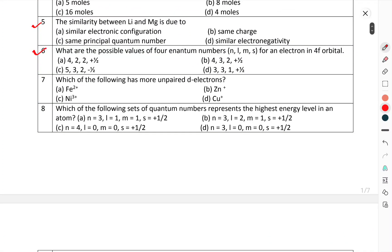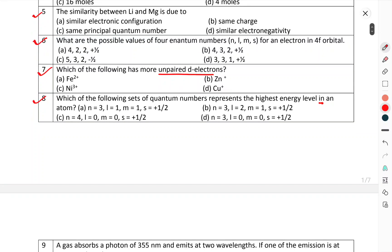Question number 6: What are the possible values for the quantum numbers n, l, m, s for an electron of 4f orbital? Question number 7: Which of the following has more unpaired electrons? Question number 8: Which of the following sets of quantum numbers represent the highest energy level in an atom? Question number 9: